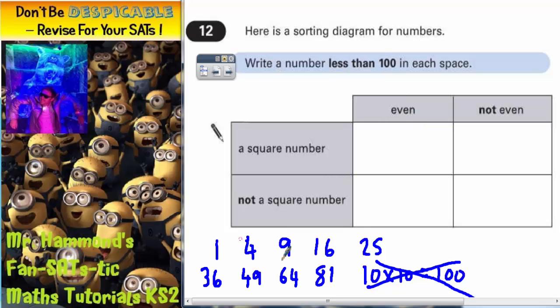So these are our square numbers. The even ones are 4, 16, 36 and 64. So we can write any of those in there. So we could write 4, 16, 36 or 64.